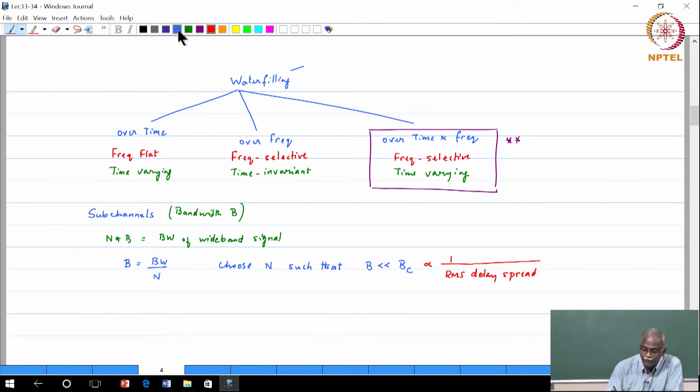The equalizer complexity side says if I have a narrowband channel, this means the bandwidth is small. If I reduce the bandwidth, the symbol period will increase. The baud rate has reduced, the symbol duration has increased. This implies that the effect of ISI, inter-symbol interference, is going to be less.